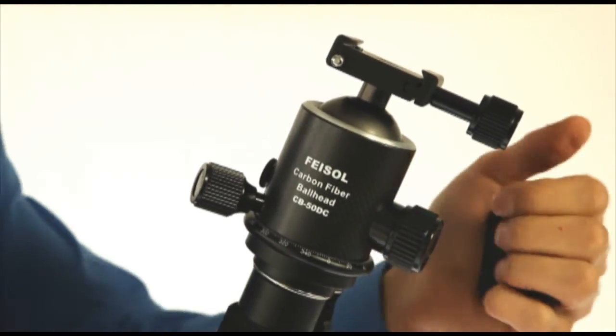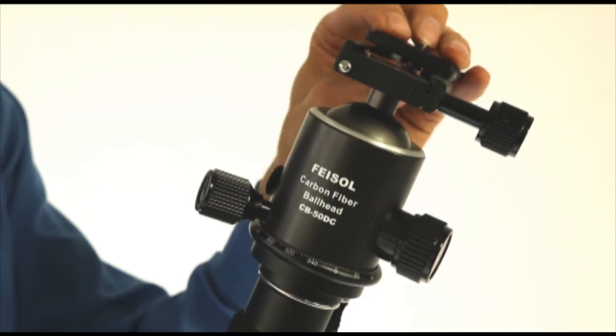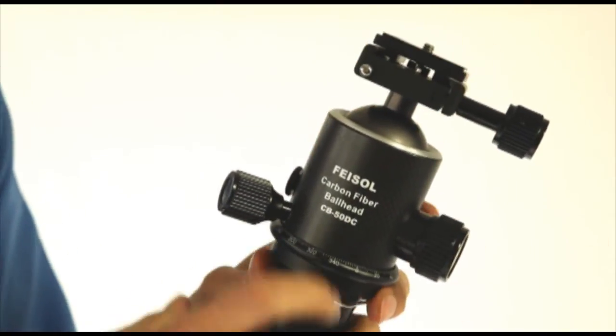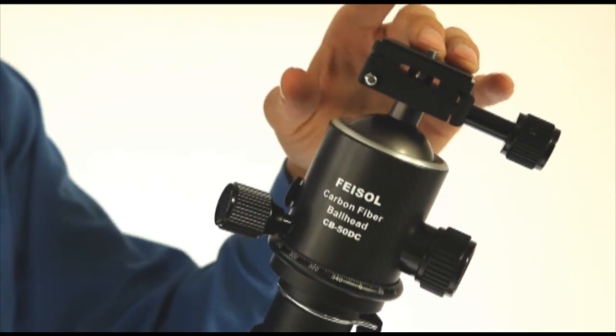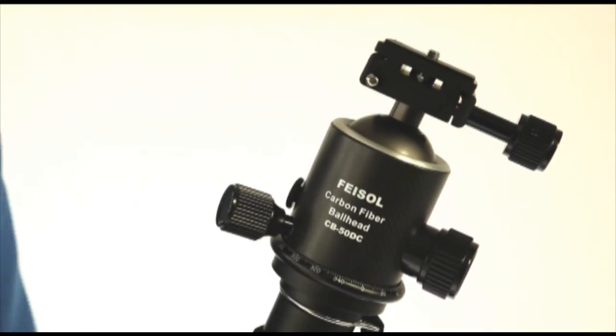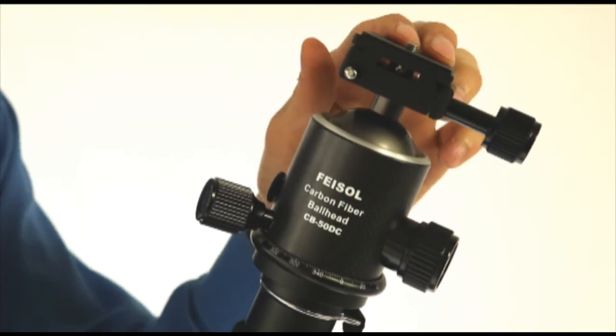To add the release plate, first adjust the locking knob and place the plate on top. Press the safety pin and slide it into place. You'll see that there's some forward and back motion to adjust for the center of gravity of your camera. And then tighten the knob to lock it in place.